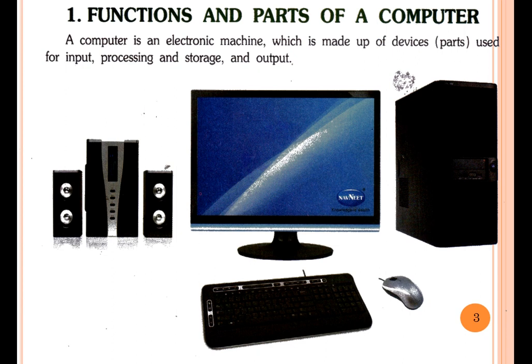Why electronic machine? Because some machines use batteries, some machines use different powers, but computer uses electricity. That's why computer is an electronic machine. Which is made up of devices — in computer language, parts ko hum devices kehte hai. Parts is known as devices.